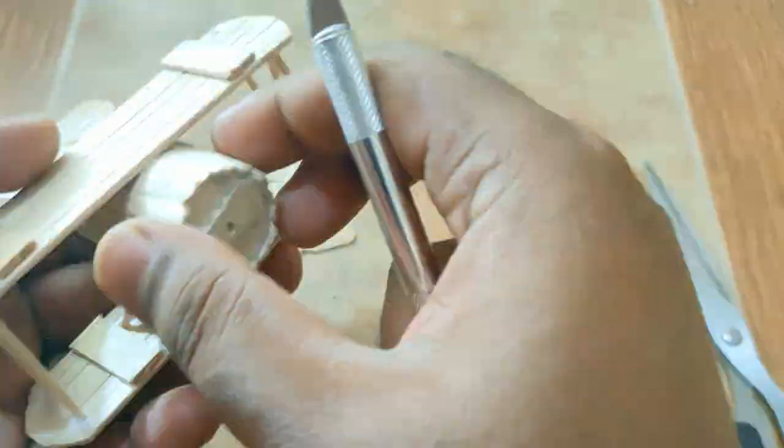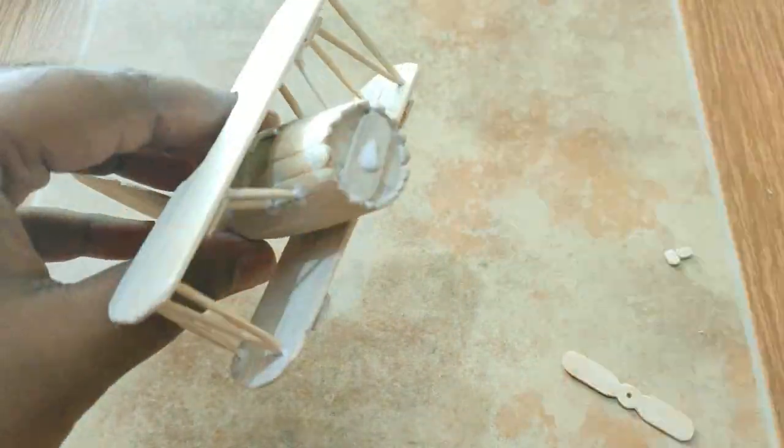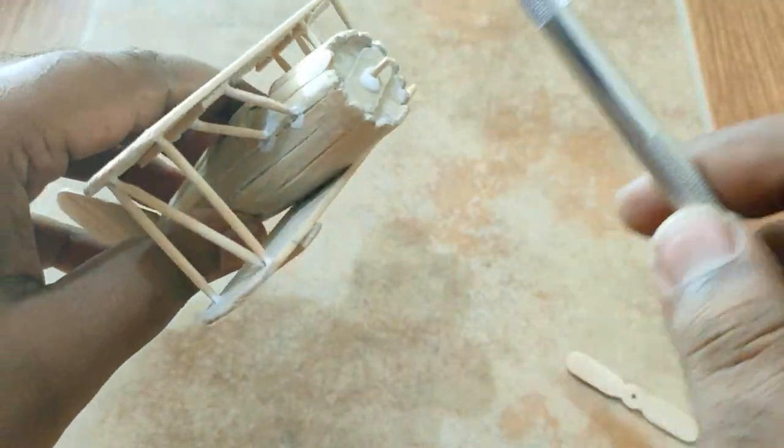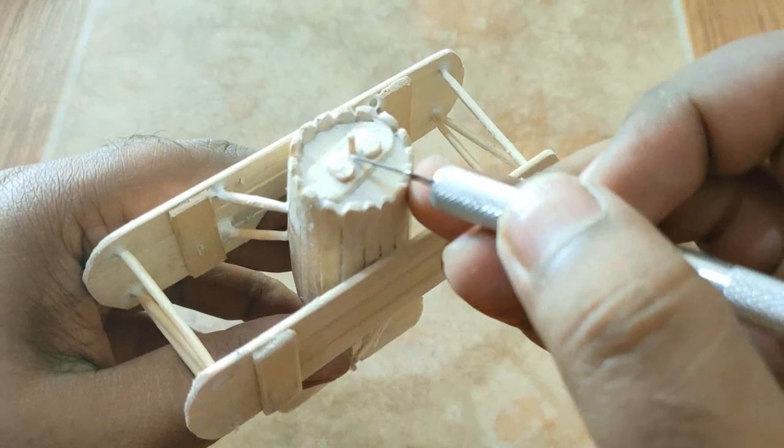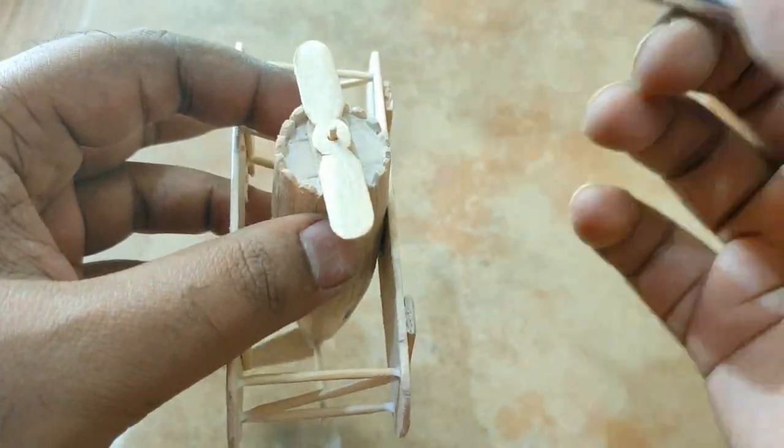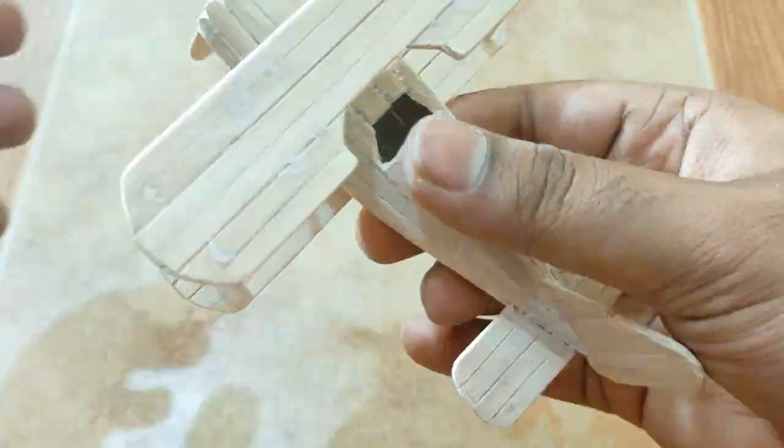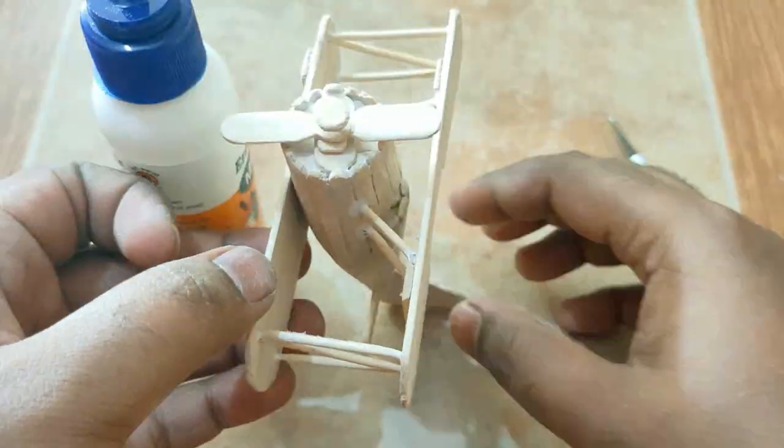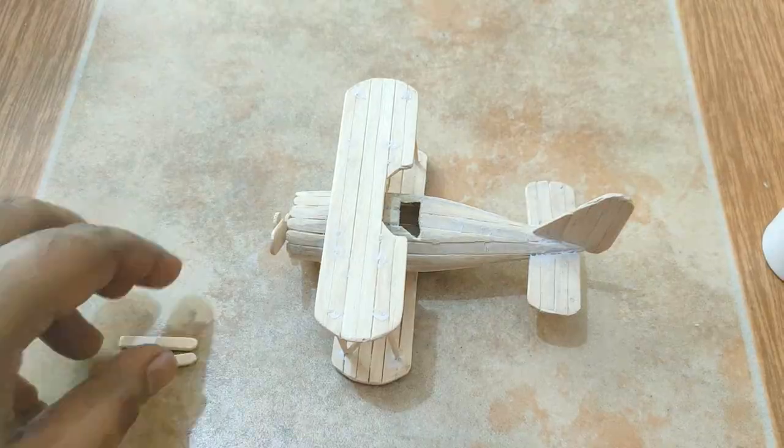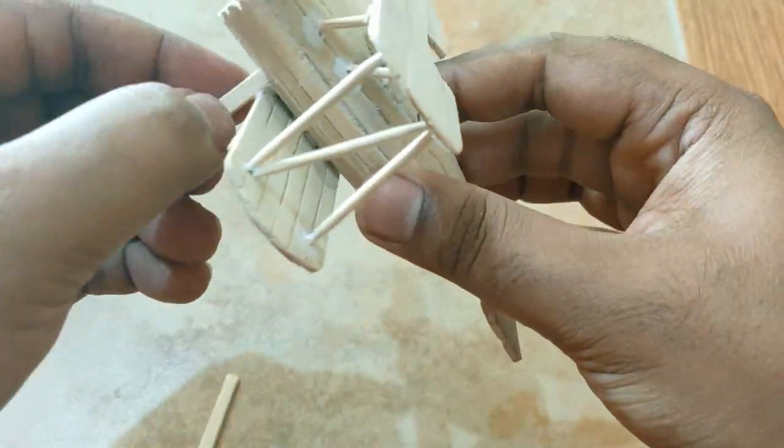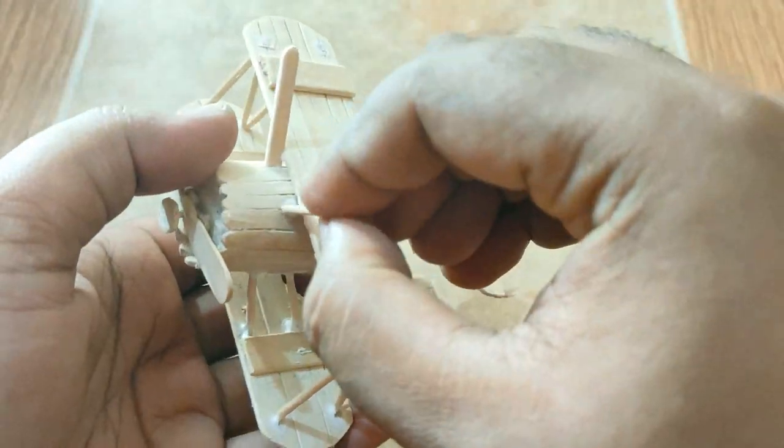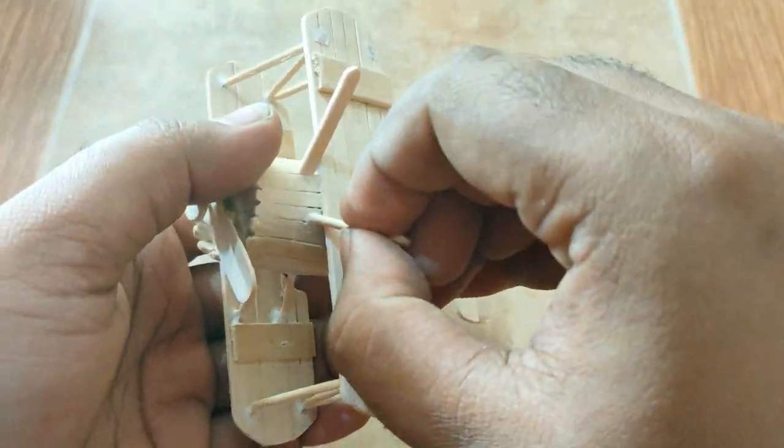Now back to the plane. Attach the propeller blade here, the fan. I realize that this glue is very bad, this is not Fevicol, it's a fake one. That's why it's leaving white marks on every joining after it dries, but the Fevicol becomes transparent after it dries.